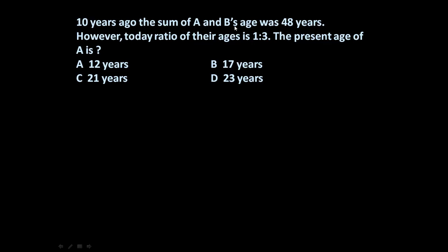First let us assume present age of A and B. Assume present age of A and B is A years and B years. Present age of A is A and present age of B is B years, 10 years ago.